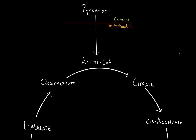First off, we need to start with our pyruvate. If you remember from glycolysis, we're taking one glucose molecule and creating two pyruvate. To start our Krebs cycle, we need to create acetyl-CoA. Pyruvate first needs to enter the mitochondria through transporters like a pyruvate transporter, and then there's a reaction of pyruvate decarboxylation — meaning we are going to be losing a carbon dioxide.